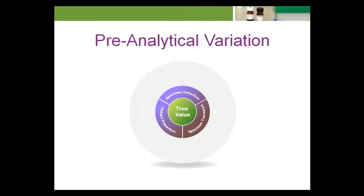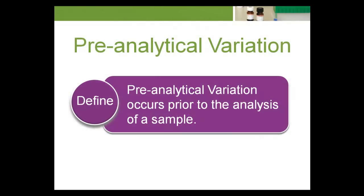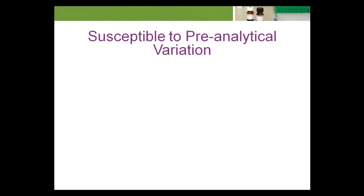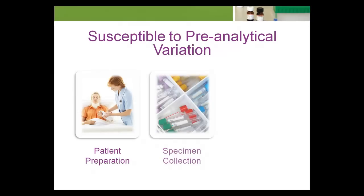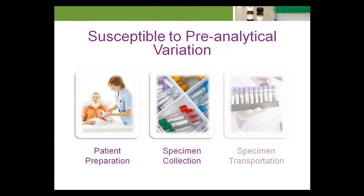We'll begin with pre-analytical variation and its causes. Pre-analytical variation occurs prior to the analysis of a sample. Three main areas susceptible to pre-analytical variation are patient preparation, specimen collection, and specimen transportation.